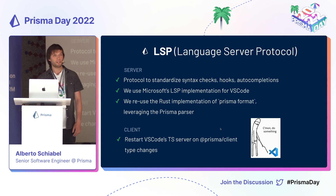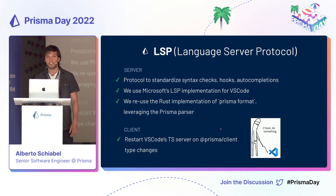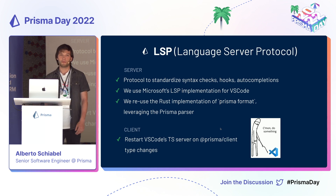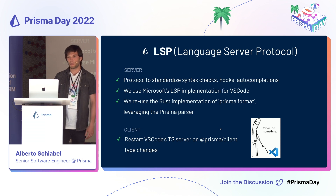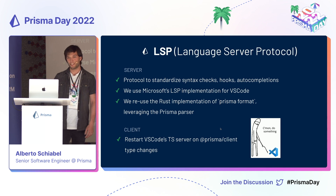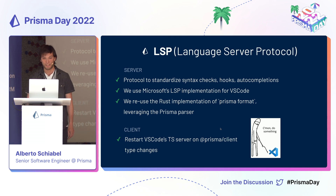We also had a few gotchas while developing this. For instance, when using the Prisma Client, we had to watch for changes in the types generated by the client, and we weren't able to do that with the file watcher supported by VS Code by default. So we had to work around that with our custom file watcher. Moreover, we have to manually restore the TypeScript server every time we change the client types, because the TypeScript server, every once in a while, doesn't really realize that things have changed under the hood.